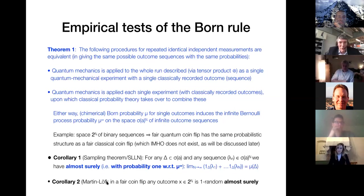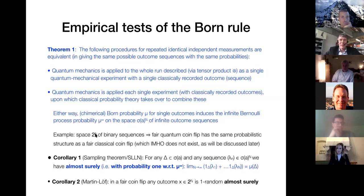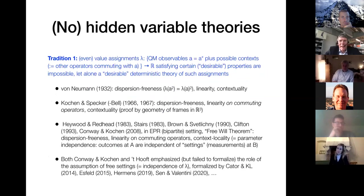Another significant result, due to Martin-Löf, as I mentioned last time: in a fair coin flip, either classical or quantum — because they have the same probabilistic structure — any outcome is 1-random almost surely. This is the basis of applying the Born rule to experiment, and then there are at least two ways to think and proceed.